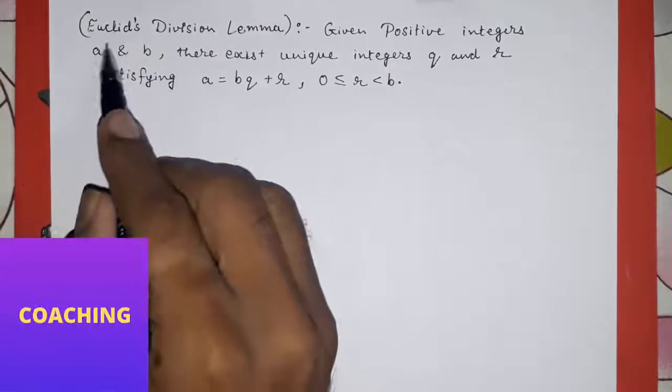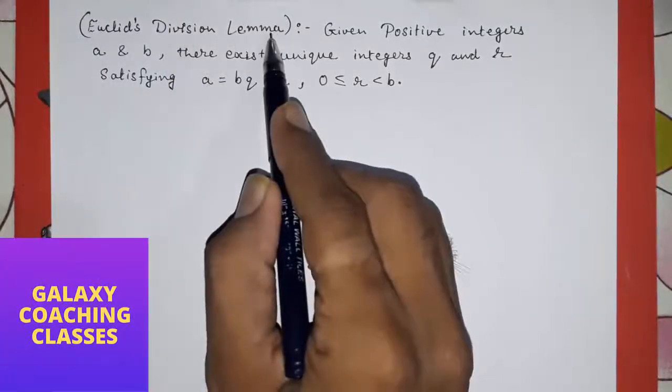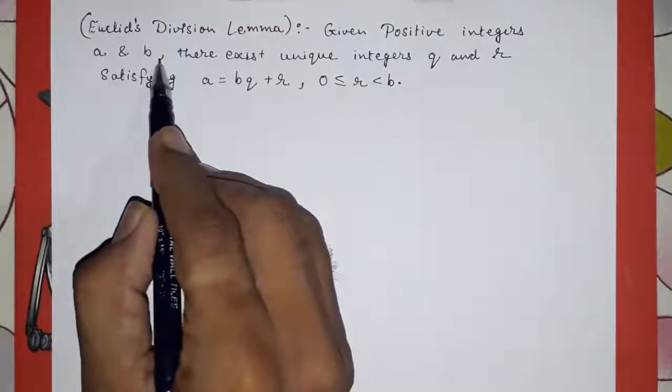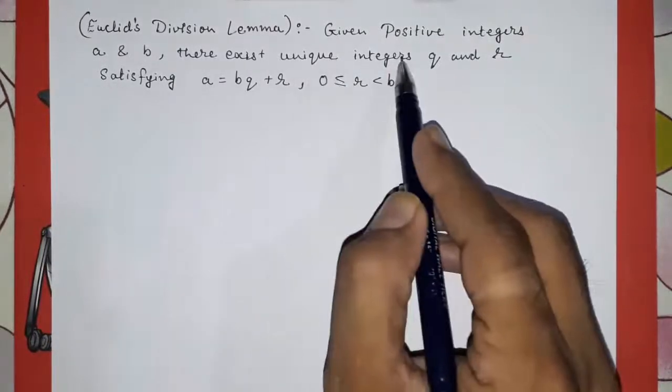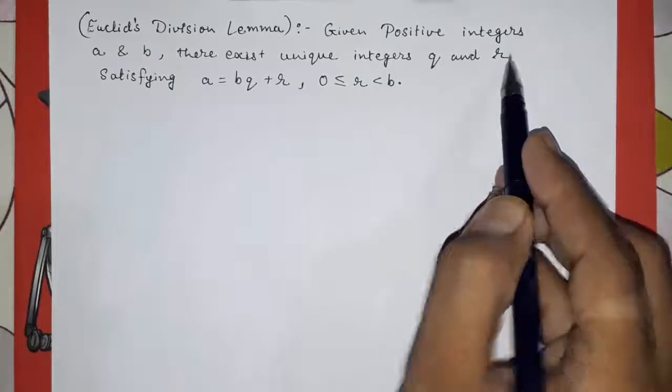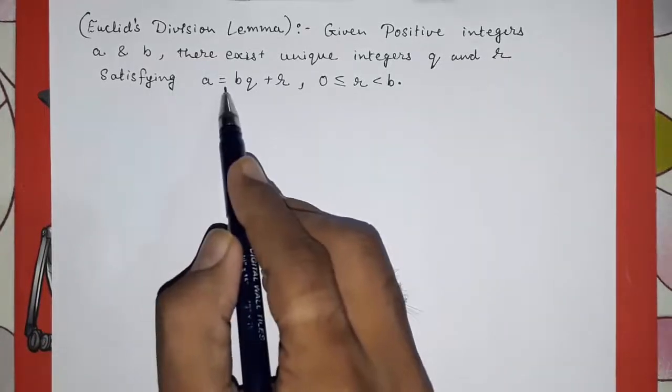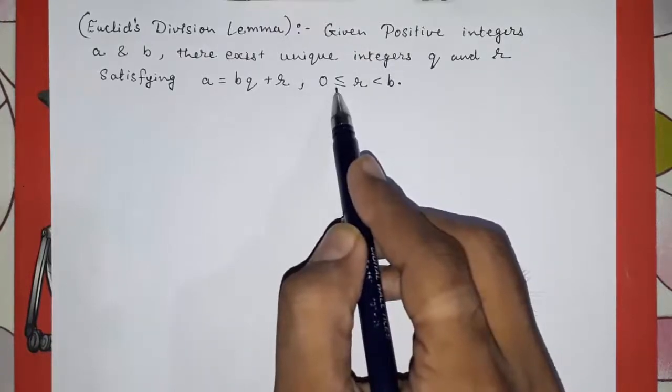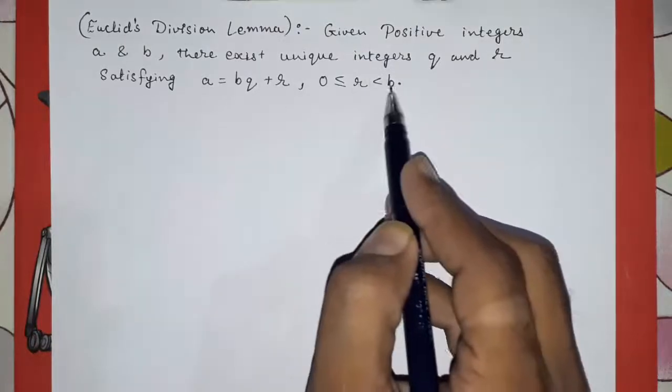Hello friends, today we are going to study about Euclid's division lemma. Given positive integers a and b, there exist unique integers q and r, satisfying a is equal to bq plus r, where r is greater than or equal to 0, but less than b.